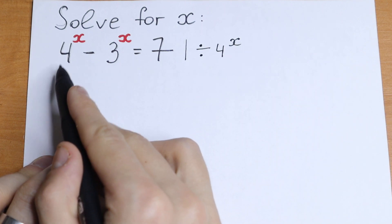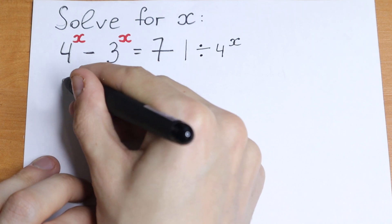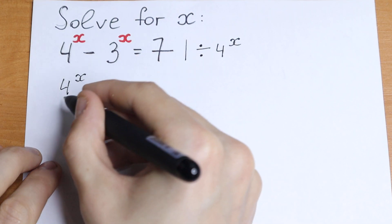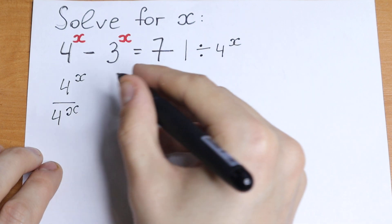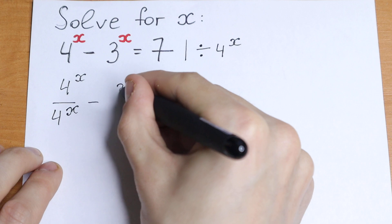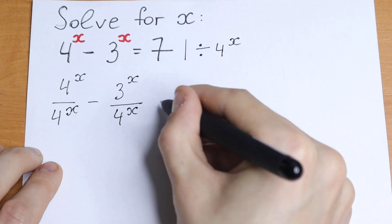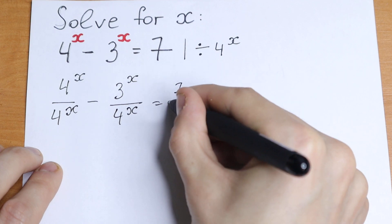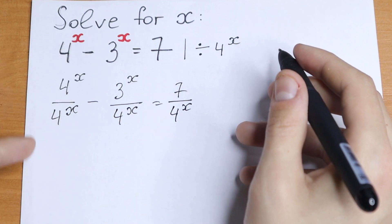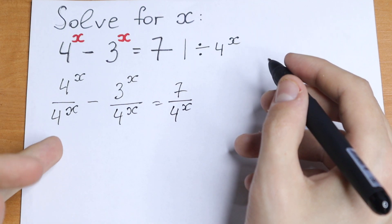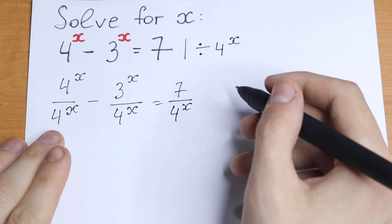Dividing both elements by 4 to the power x, we get: 4^x divided by 4^x, minus 3^x divided by 4^x, equals 7 divided by 4^x. Nothing hard — just divide both sides by 4^x. If we simplify this, we get the same result. Let's go next.